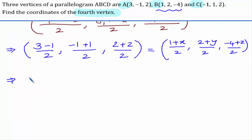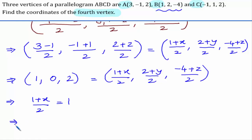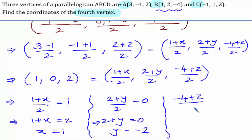Simplifying further, we get (2/2)=1, 0, and (4/2)=2 for the midpoint of AC, which equals (1 + X)/2, (2 + Y)/2, (-4 + Z)/2. Equating all coordinates: (1 + X)/2 = 1 gives X = 1; (2 + Y)/2 = 0 gives Y = -2; (-4 + Z)/2 = 2 gives Z = 8.